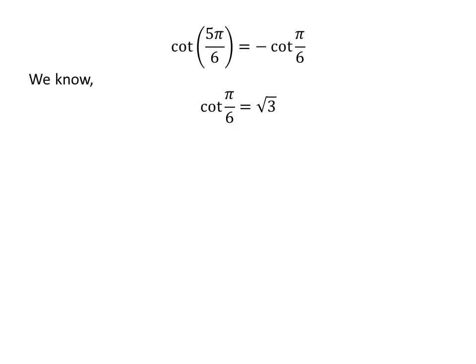We know cotangent of pi upon 6 is equal to square root of 3. So cotangent of 5 times pi upon 6 is equal to minus square root of 3.